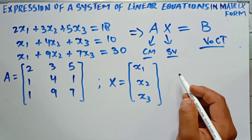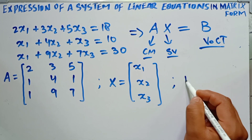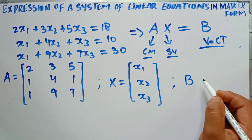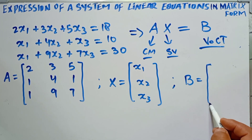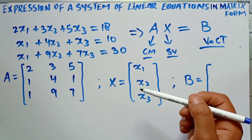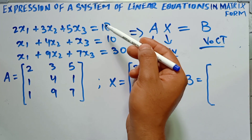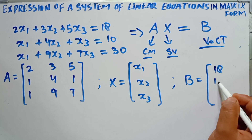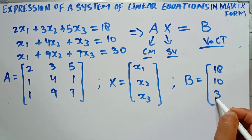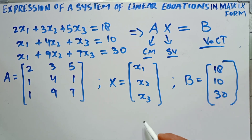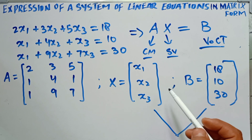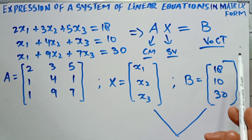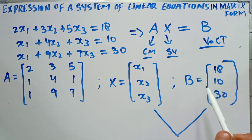And B is the vector of constant terms — it contains 18, 10, and 13. We can also observe here that the solution vector X and the vector of constant terms B are always column vectors.